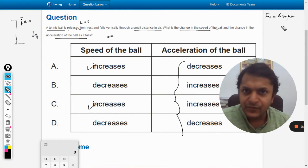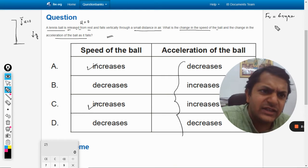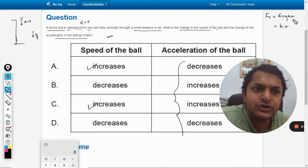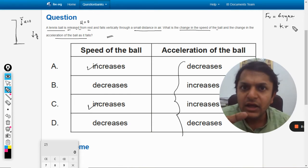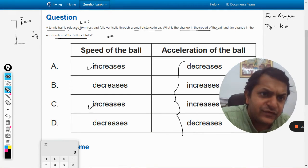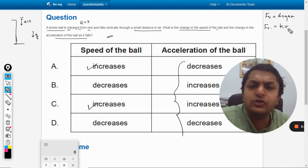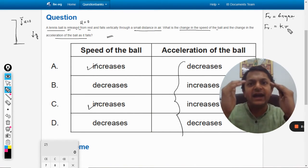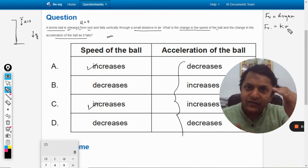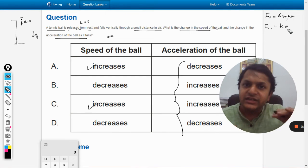But if we are not studying that, then it is generally given that you consider it as a constant k and it is directly proportional to the velocity of the ball. So as the velocity increases as the ball falls down and velocity keeps on increasing, the drag force keeps on increasing.